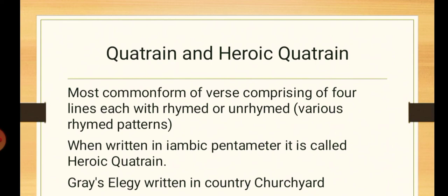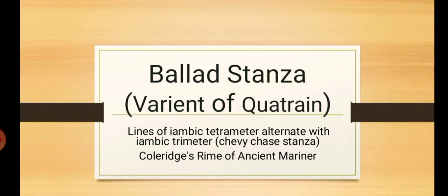Another variant of this Quatrain is Ballad Stanza. Why is Ballad Stanza the variant of Quatrain form? Because it comprises of lines of iambic tetrameter, which alternate with iambic trimeter. There are four metered lines and three metered lines, and they alternate. That's why it is also called CMJC Stanza. There is a difference in the pattern of the metrical composition, but it is a variant of Quatrain. The most famous practice is used in Coleridge's Rime of the Ancient Mariner.